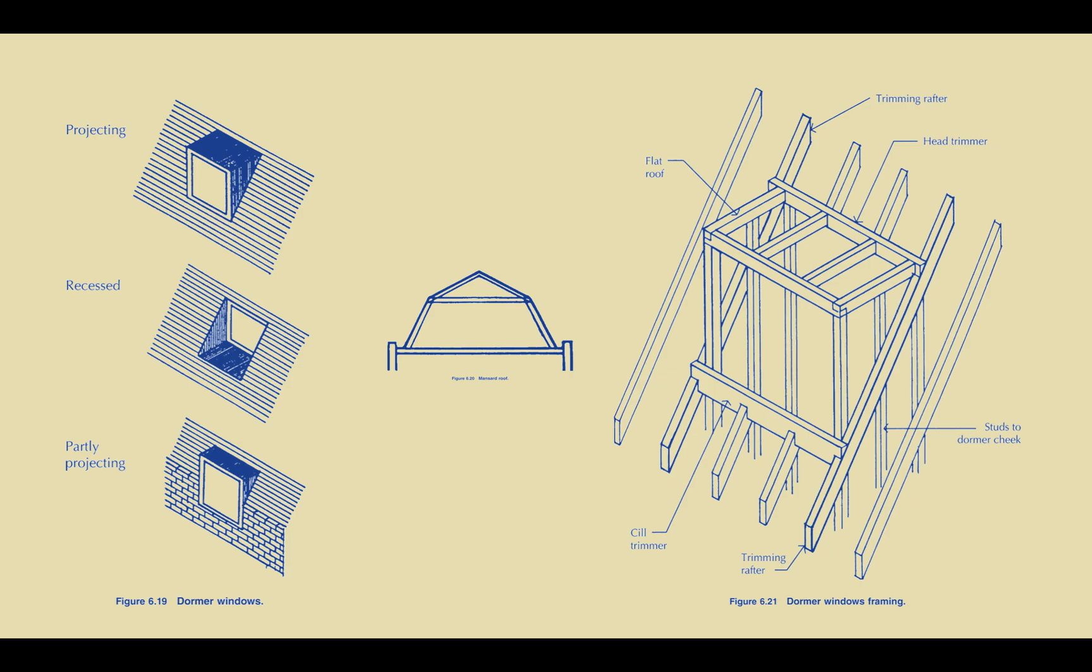The section on dormer windows is less important as these are not used very regularly. However you should look through it quickly to be able to recognize the possibilities of a projecting, recessed or partly projecting dormer window inside a pitch roof configuration.